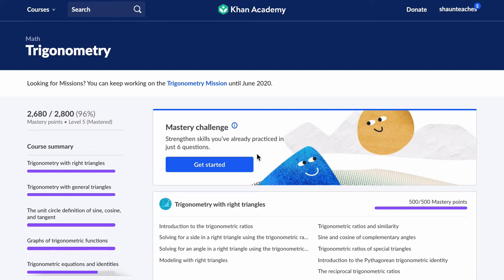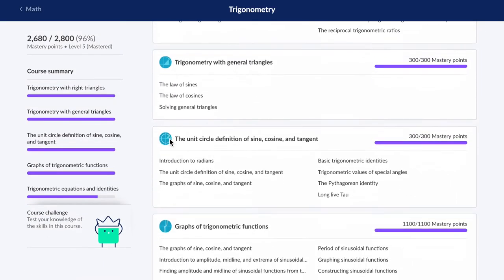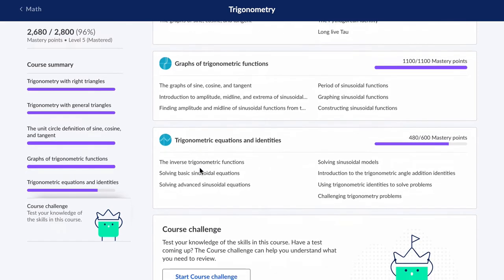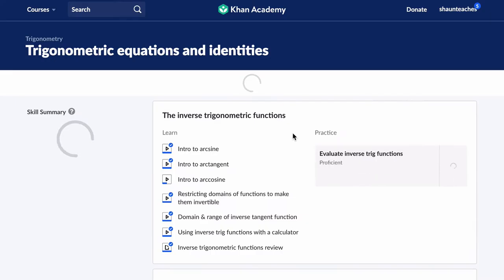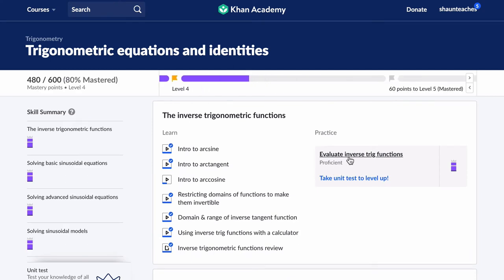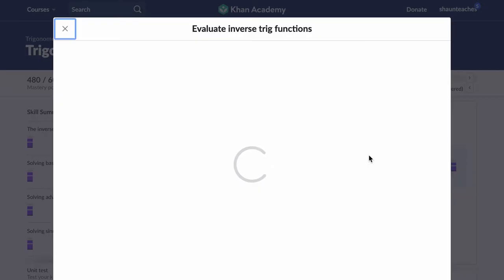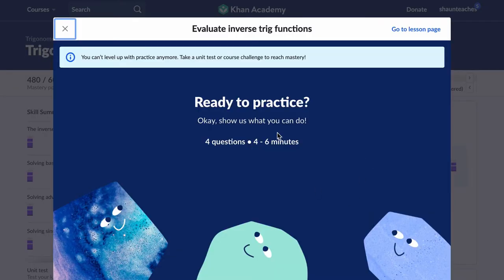Hello, welcome. In this video, we're looking at Khan Academy, the last section, which is trigonometric equations and identities. The first thing we're looking at is evaluating inverse trig functions. So let's do a couple problems from this section so you can get a sense of it and see how it works.